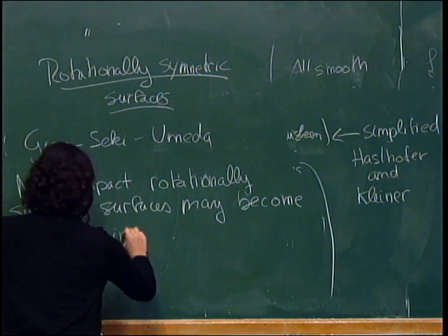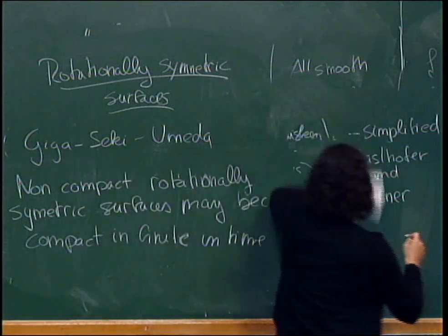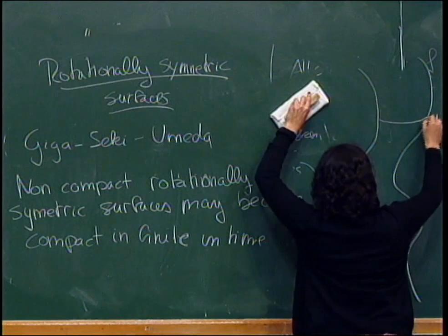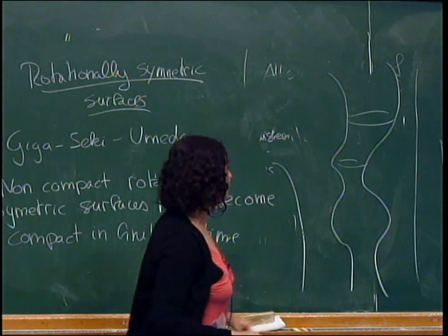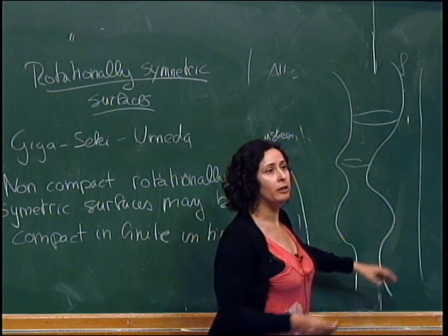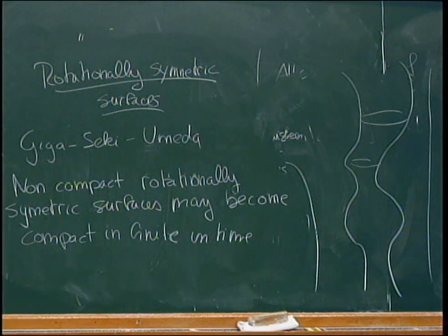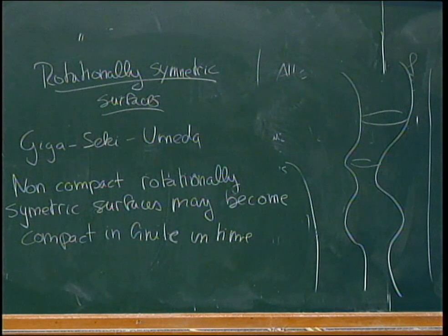You can have all sorts of combinations of phenomena. Your initial condition could be something very strange but rotationally symmetric. What could happen is that you lose one end or both ends and become compact, or if the surface opens very fast it may happen that you have singularities but it doesn't become compact at all. The theorem is stated with all precision in the notes. I'm not going to do it here, because I wanted to mention one more surprising result in the last few minutes.